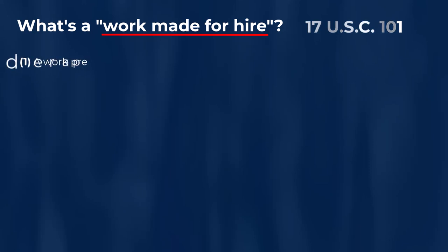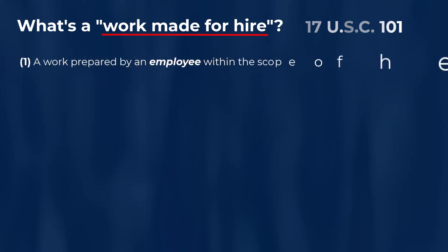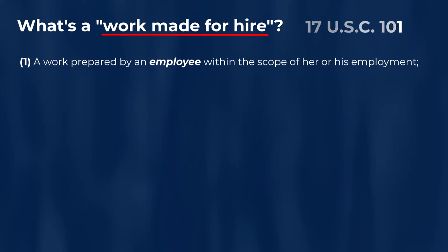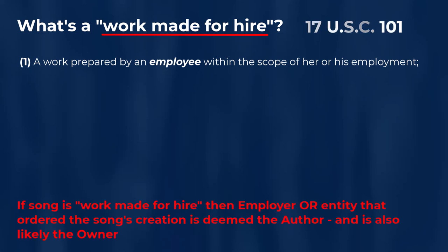Number one: a work prepared by an employee within the scope of her or his employment. So if you're an employee — like a W-2 employee earning an hourly wage or salary — and your employer asks you to basically make a song or some kind of contribution to a song, that's going to be a work made for hire. And when a creative work like a song is a work made for hire, it's the employer that's deemed the author of that particular song.